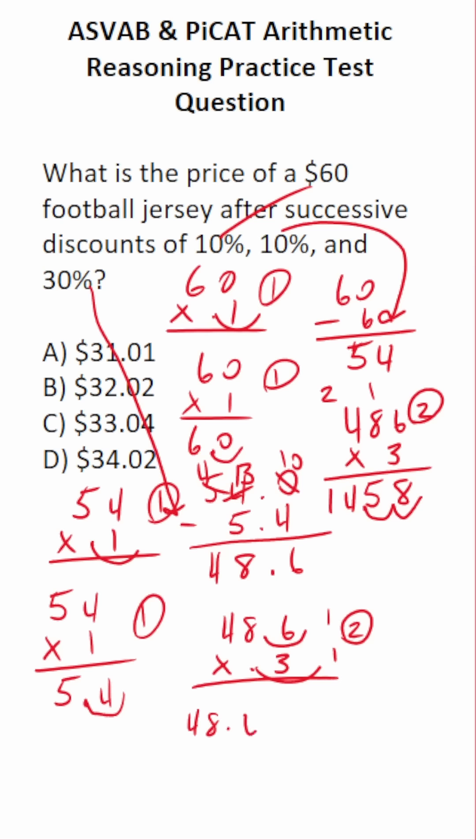To get our final answer, we're going to do 48.6 minus 14.58. Add a zero placeholder here if you need it. We can't do zero minus eight, so we're going to have to borrow. This becomes five. This becomes ten. Ten minus eight is two. Five minus five is zero. Eight minus four is four. Four minus one is three. So after successive discounts, it's going to be D, $34.02.